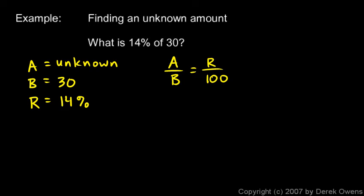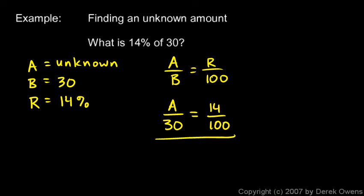Plugging in the known values: a is unknown so we leave it as a variable, b is 30, and r is 14, giving a/30 = 14/100. To solve for a, we cross multiply: 100a = 14 × 30.